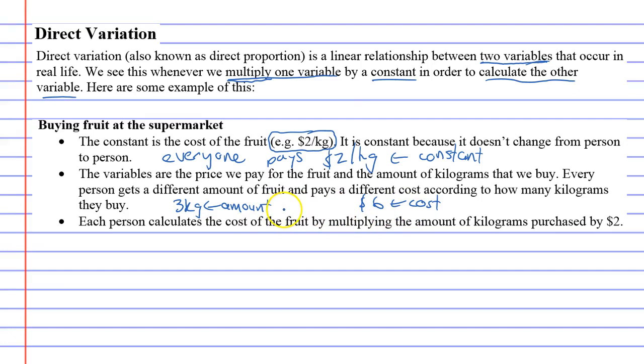So these are called variables because they change, whereas the $2 per kilo is constant.